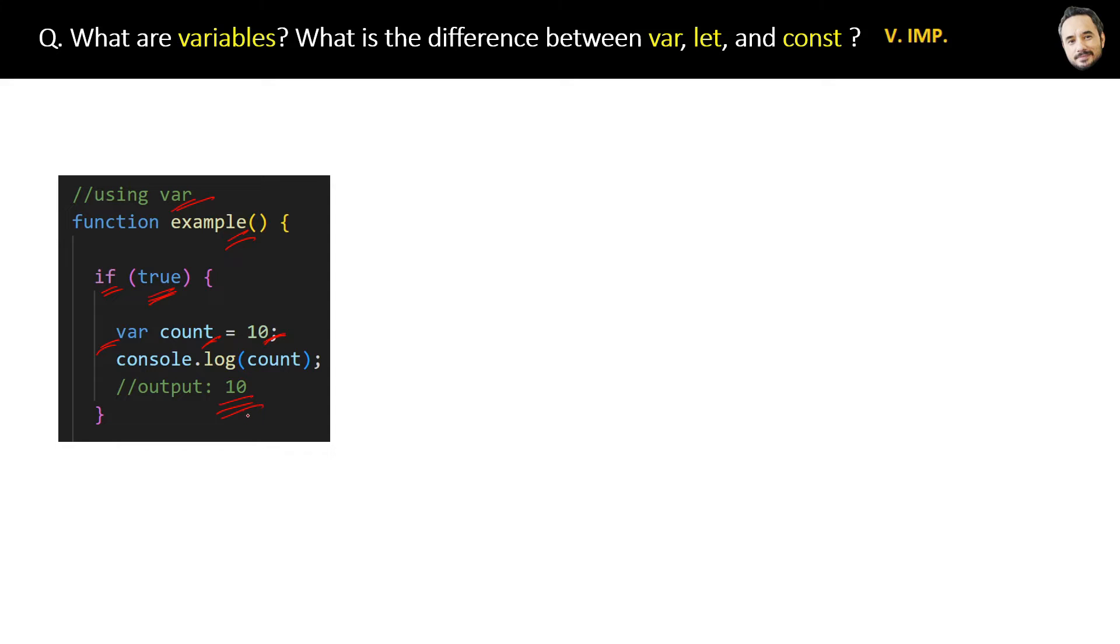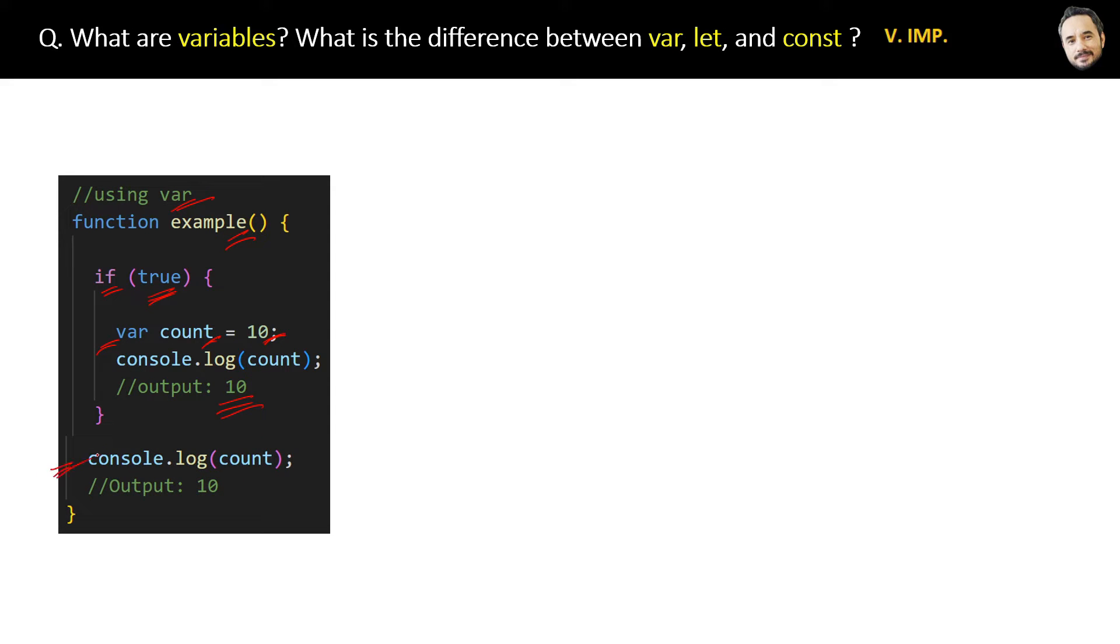But when we print the count even outside the if block, it will still print 10 as the output. The point is: var creates a function-scoped variable, meaning that even though you defined the variable inside the if block, it is still available outside the if block.